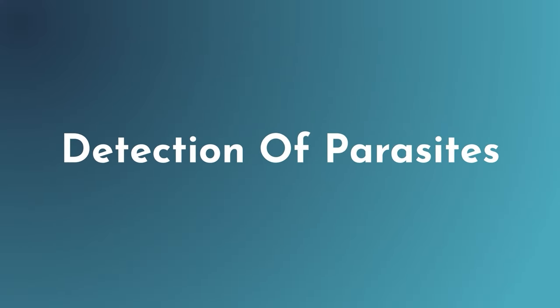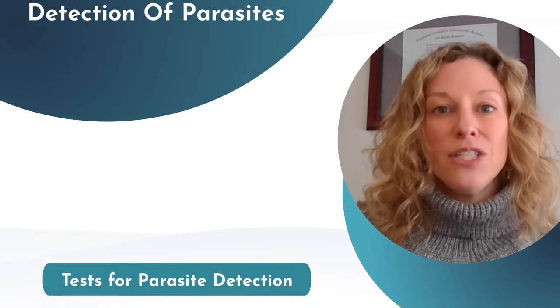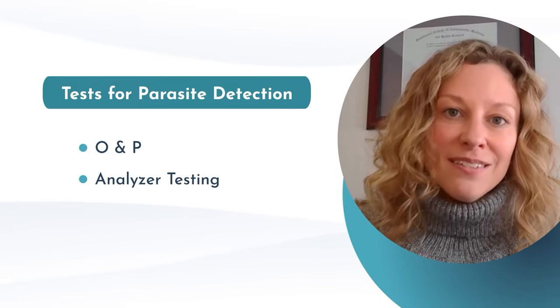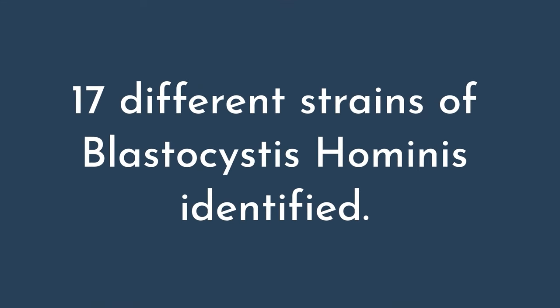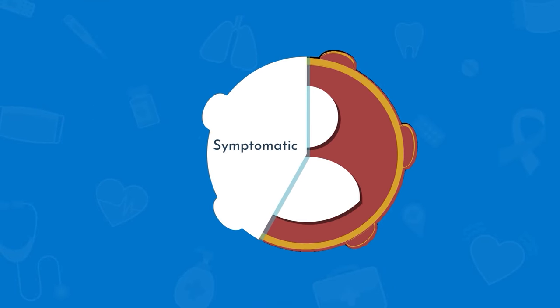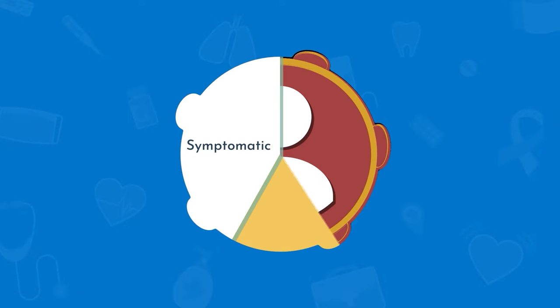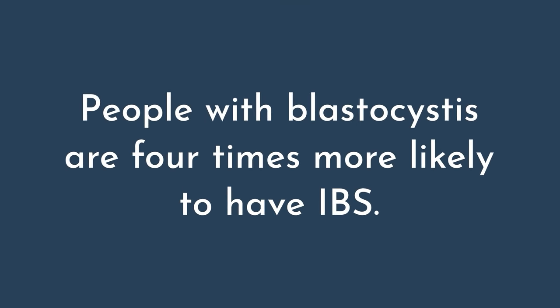A complete gut assessment includes detection of parasites — done with O&P, ELISA testing, and PCR testing. One particular species we see more commonly here in the US is blastocystis hominis. In about 20% of patients we test, we find positive parasite results, most often due to blastocystis hominis. There have been up to 17 different strains identified with different degrees of pathogenicity. Interestingly, less than half the people with blastocystis are symptomatic with gastrointestinal symptoms.